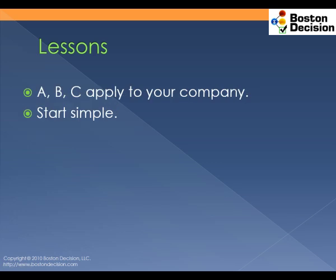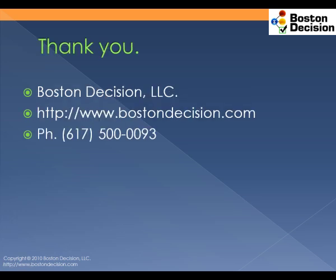A, B, and C are meant to be examples of variables that exist in your organization. There are hundreds if not thousands of possible variables that may be floating around within your given company. The most important thing to note is that each organization should start simply — identify areas where predictive modeling may be able to help in the short term, and then develop a strategic plan for how to expand that in the long term. From all of us here at Boston Decision, we thank you very much for your time.